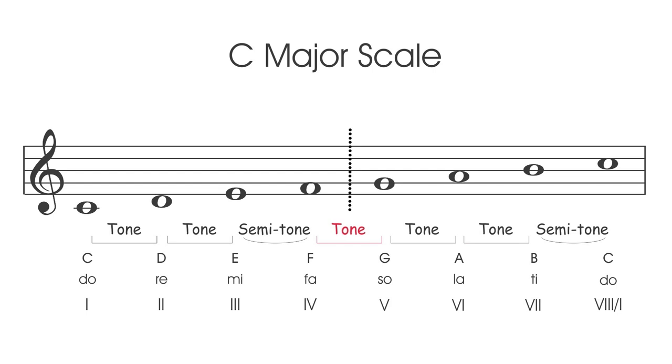The grouping on the left is referred to as the lower tetrachord and the grouping on the right as the upper tetrachord.